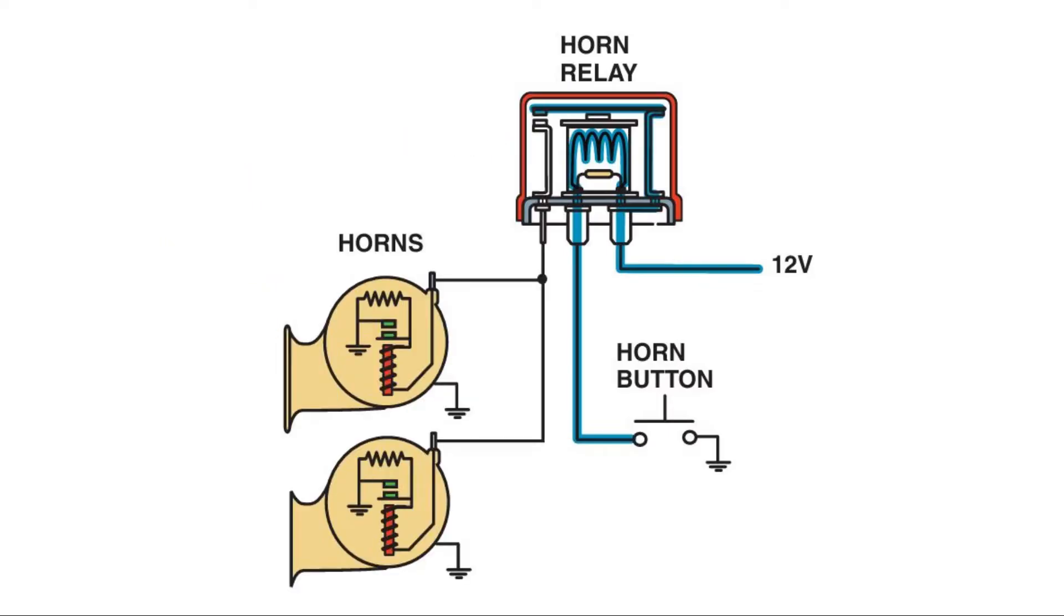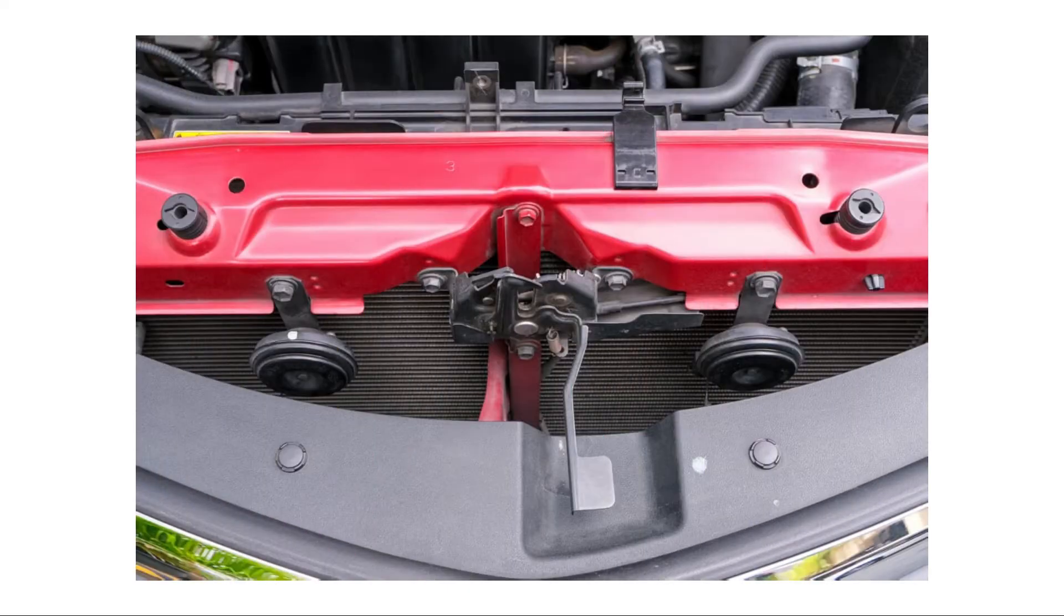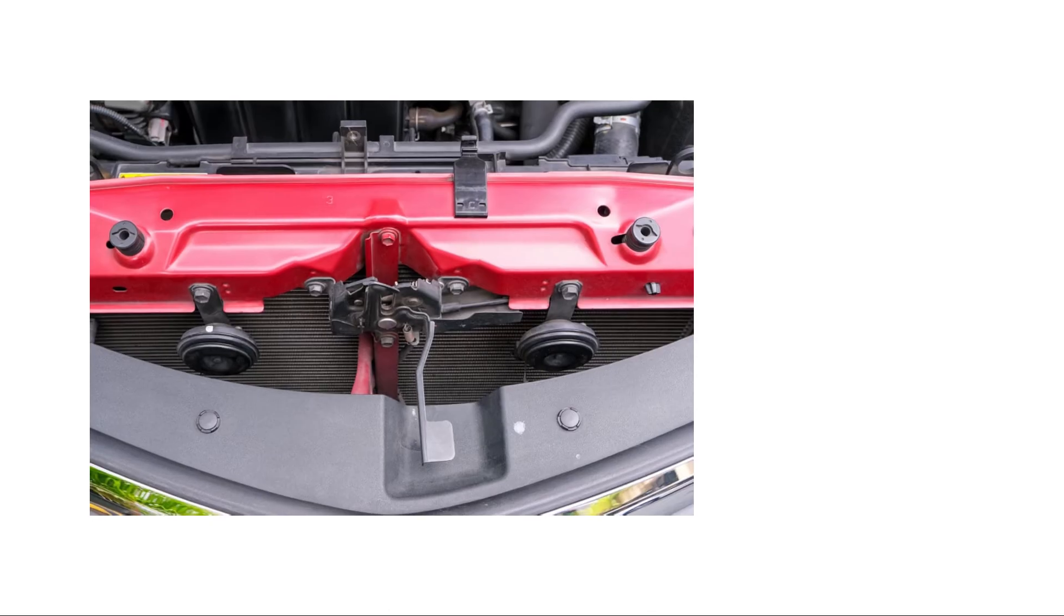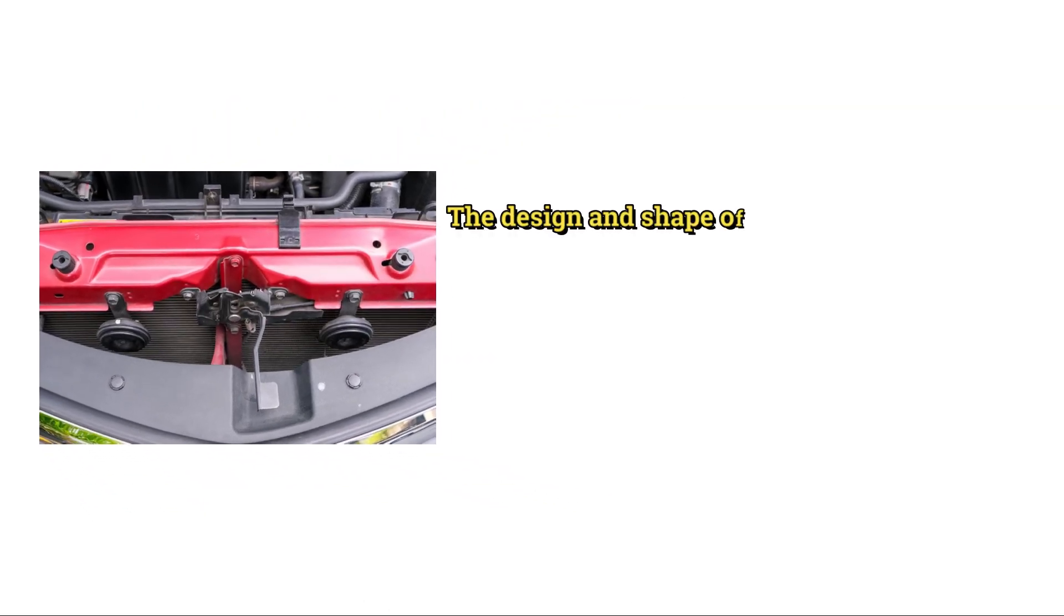Most vehicles are equipped with two horns that are wired in parallel with each other and in series with the switch. One of the horns typically has a slightly lower pitch than the other. The design and shape of the horn determine the frequency and tone of the sound.